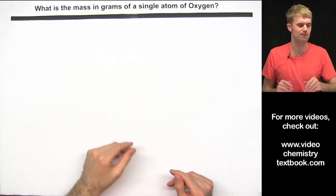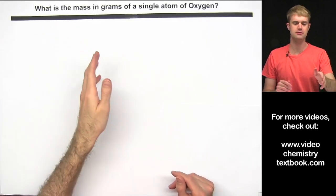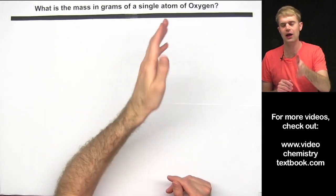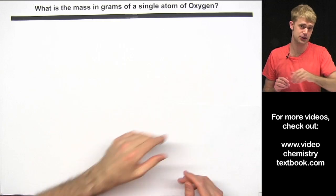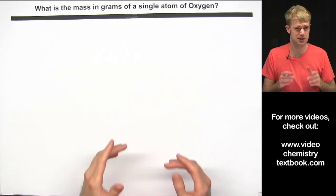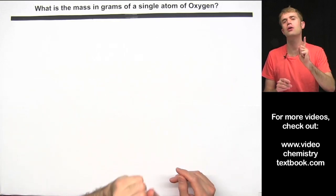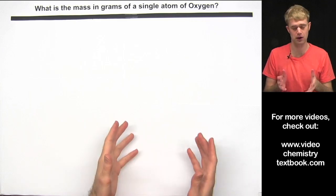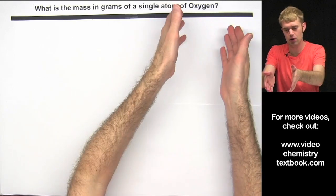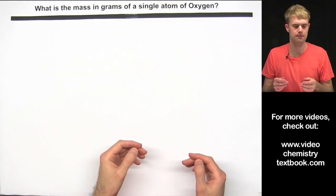Here's the first one: What is the mass in grams of a single atom of oxygen? This is the type of question that asks us to calculate the mass of a single atom of some element. Here, we're going to use oxygen as an example.